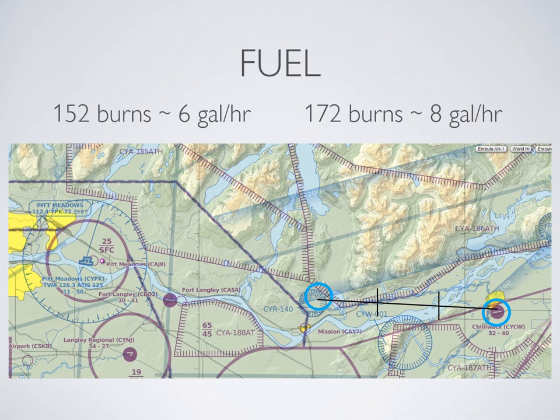Now that we know how long it will take us to reach our destination, we want to think about fuel. In this situation, we might not be concerned about it as our original and new destinations are roughly the same distance away. If we wanted to be more precise, we can assume about 6 gallons per hour as a burn rate, which means 1 gallon of fuel for each 10 minutes. We determined that 8 minutes was all we needed, so we really only need 1 gallon for this trip, plus 30 minutes of reserve fuel as per the Canadian Aviation Regulations.